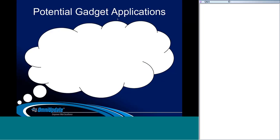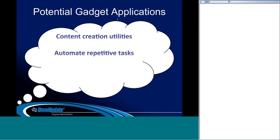A few potential gadget applications: content creation utilities like a Lorem Ipsum generator or a color picker to help with page development. You can automate repetitive tasks like bulk assigning users to multiple groups or doing a user import. You can also integrate third-party API clients — if they use RESTful APIs and have their APIs documented, you can integrate those into OU Campus, with examples being YouTube or Flickr repositories.